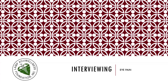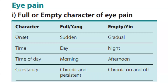Let's go to interviewing for eye pain. We have here the differences between full or excess, Yang character, and deficient or Yin character of eye pain. For the onset, a full or Yang character of eye pain would be sudden, occurring during the day and morning, and it is chronic and persistent. While the empty or Yin character of eye pain would be gradual, occurring at night or afternoon, and chronic but on and off.